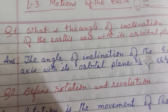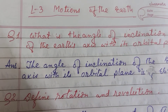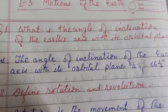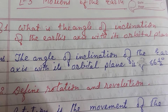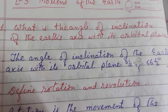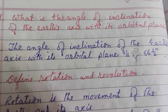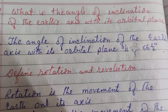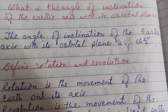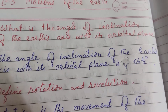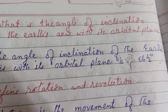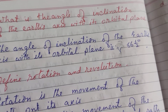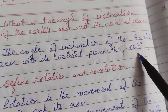What is the angle of inclination of the Earth's axis with its orbital plane? The angle of inclination of the Earth's axis with its orbital plane is 66.5 degrees.